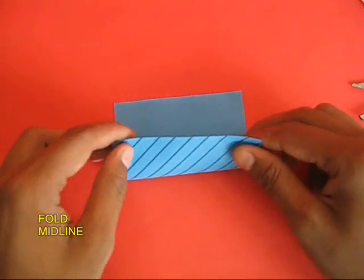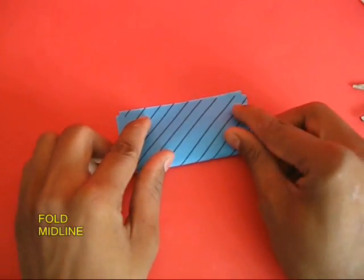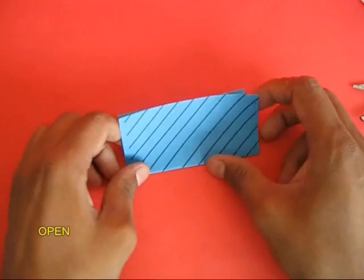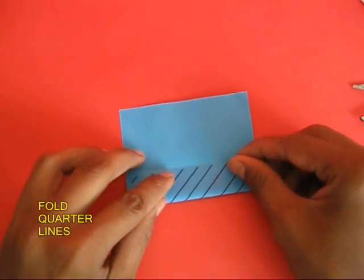You can make an amazing cube using just 6 squares without any glue. Take a square piece of paper and fold along the midline and then open it.